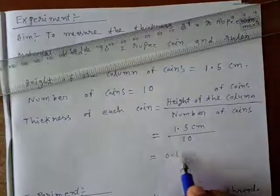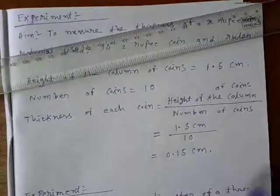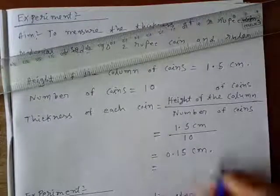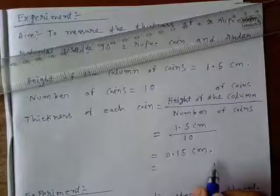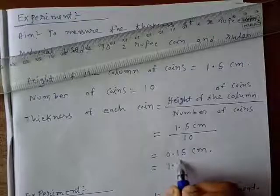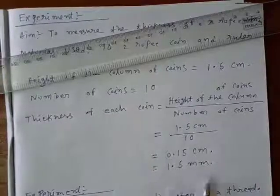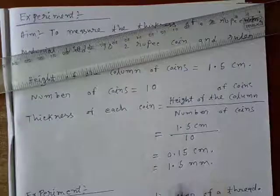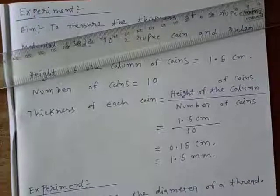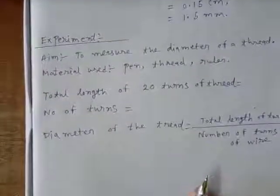Now, this will be 0.15 cm. If we want to convert it into millimeter, we have to just multiply it by 10. So 1.5 millimeter is the thickness of each coin. Now, let us move to the second experiment.